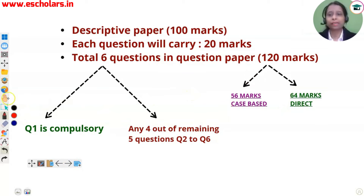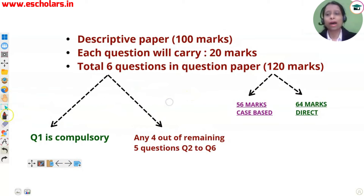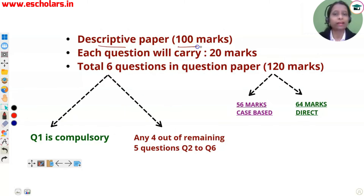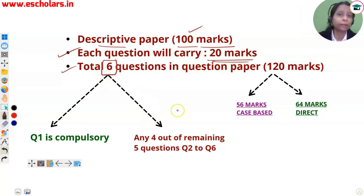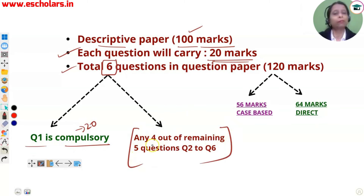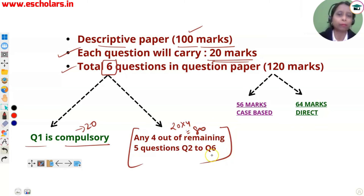Today you will get all your questions answered. Let's talk about the overall structure. Your law paper is a descriptive paper of 100 marks. You will get 6 questions, each of 20 marks, making a total of 120 marks. Question number 1 is compulsory, so you must attempt that 20-mark question. From the remaining 5 questions, you need to attempt any 4, which is 20 into 4 = 80 marks. So you attempt 100 marks out of the 120 available.